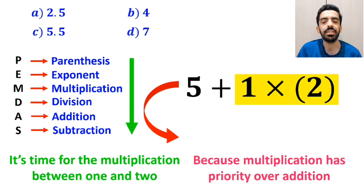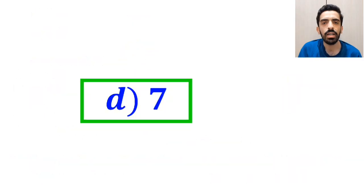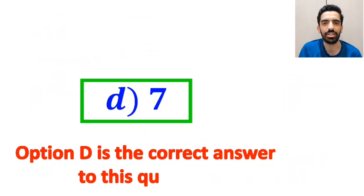So, instead of this expression, we can write 5 plus 2, which ultimately gives us the answer 7. Therefore, option D is the correct answer to this question.